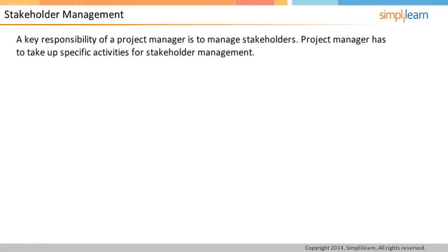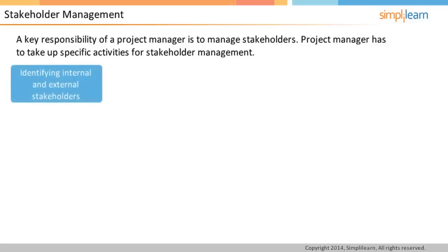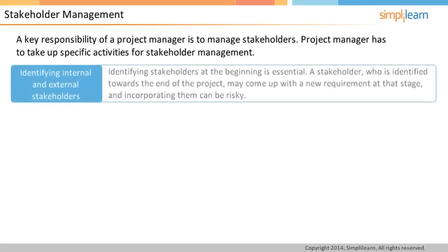One of the key responsibilities of a project manager is to manage stakeholders. A project manager has to involve the stakeholders from the beginning of the project until the end, so they are aware of every step. A project manager has to take up specific activities for stakeholder management, identifying both internal and external stakeholders. Missing out any stakeholders can be disastrous for a project. A stakeholder who is identified towards the end of the project may come up with their own requirement at that stage and incorporating them can be risky.